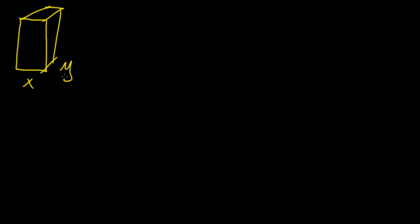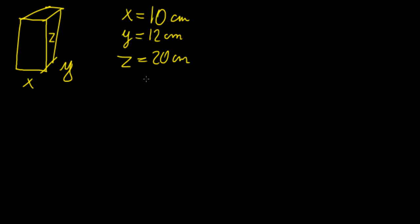Let me show you another example. Let's say we have a box with the following dimensions: x, y, and z. So let's set x equal to 10 centimeters, y equal to 12 centimeters, and z equal to 20 centimeters. Let's say there's an error in our measurement — for each of these measurements there's an error of 0.05 centimeters that we need to take into account. The question is: what is going to be the greatest amount of error that results in our measurement of the surface area of this box?